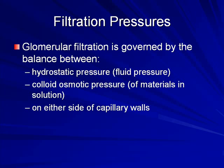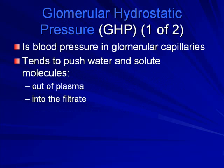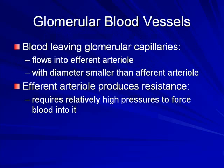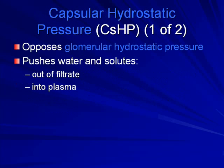On either side of the capillary walls, blood pressure in the glomerular capillaries tends to push water and solute molecules out of plasma into the filtrate. Significantly high capillary pressures, as in the systemic circuit, are due to the arrangement of vessels in the glomerulus. Blood leaving the glomerular capillaries flows into the efferent arterioles, which have a smaller diameter than the afferent arterioles, producing resistance and requiring relatively high pressure. This opposes the glomerular hydrostatic pressure.